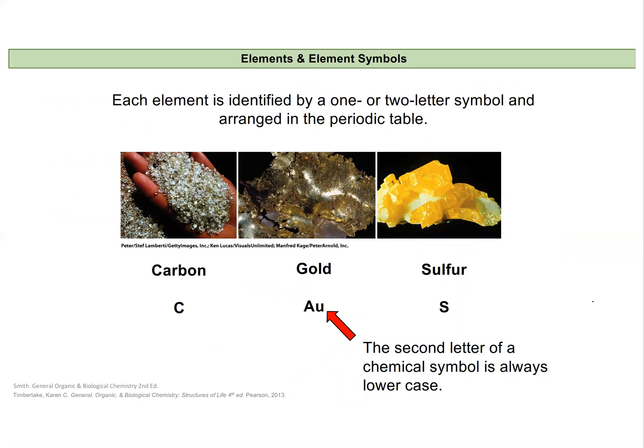So each element will be identified in this class and in chemistry by a one or two letter symbol. And we'll arrange these symbols on the periodic table to organize information about different elements.